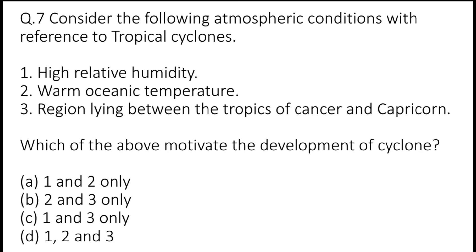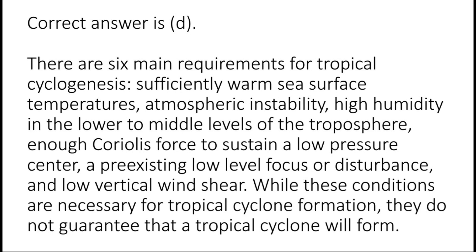Question 7: Consider the following atmospheric conditions with reference to tropical cyclones: 1. High relative humidity, 2. Warm oceanic temperature, 3. Region lying between the tropics of Cancer and Capricorn. Which of the above motivates the development of a cyclone? Options are A: 1 and 2 only, B: 2 and 3 only, C: 1 and 3 only, or D: 1, 2 and 3. The correct answer is D. There are six main requirements for tropical cyclogenesis: sufficiently warm sea surface temperatures, atmospheric instability, high humidity in the lower to middle levels of the troposphere, enough Coriolis force to sustain a low pressure center, a pre-existing low-level focus or disturbance, and low vertical wind shear. While these conditions are necessary, they do not guarantee that a tropical cyclone will always form.